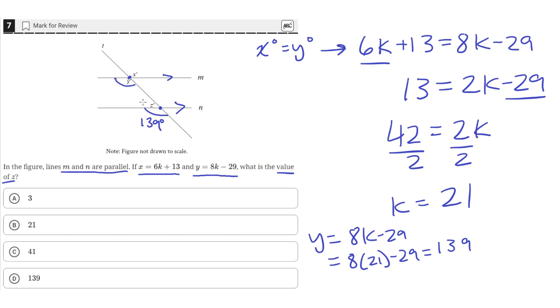And then we can use the fact that Z, the angle Z, and this 139 degree angle, form this 180 degree straight line.